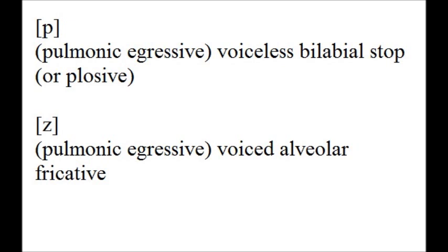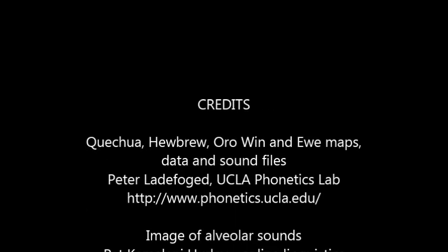For example, p is a pulmonic egressive voiceless bilabial plosive. However, we can simply say that p is a voiceless bilabial plosive. Z is a pulmonic egressive voiced alveolar fricative. Again, however, we can simply say that it's a voiced alveolar fricative.